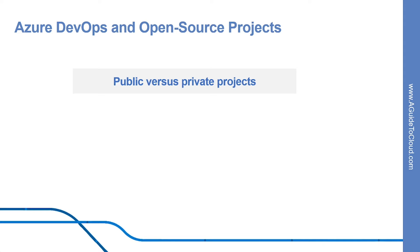Users that aren't signed into the service have read-only access to the public project on Azure DevOps. Private projects, on the other hand, require users to be granted access to the project and signed in to access the services.